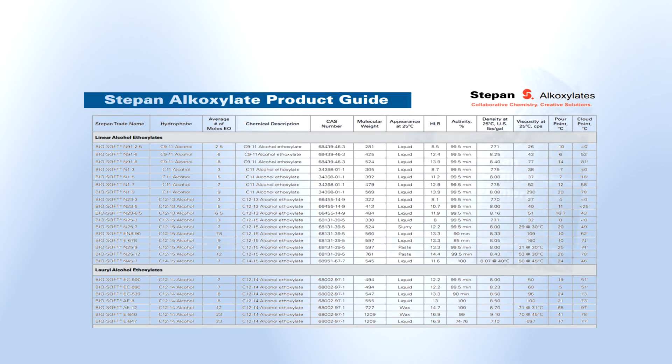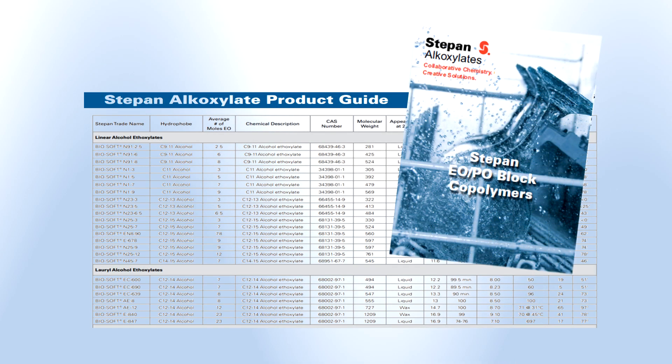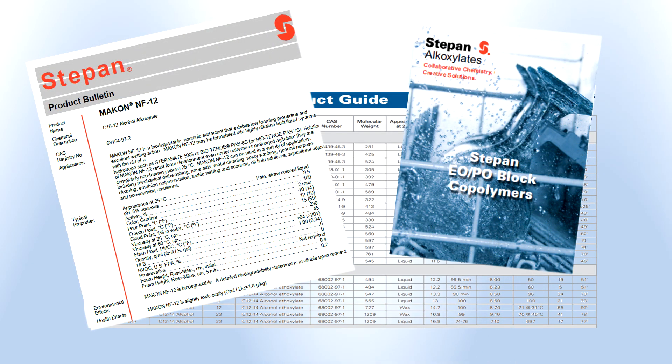For your convenience, surfactant properties such as Ross-Miles foaming, HLB, and cloud point can be found in the Stepan Alkoxylate product guide, located within the Stepan website as well as in product bulletins.